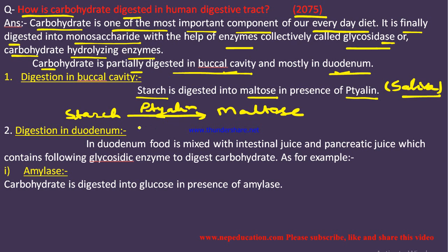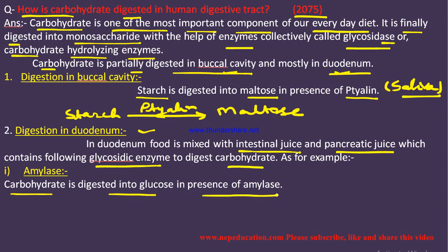In the duodenum, food material mixes with bile juice. Bile does not contain any enzymes. However, intestinal juice and pancreatic juice contain different types of glycosidic enzymes to digest carbohydrates. For example, amylase is present, and carbohydrate is digested into glucose in the presence of amylase.